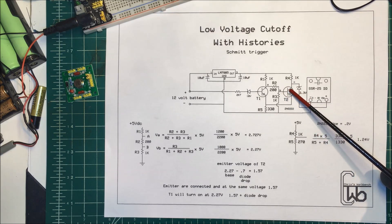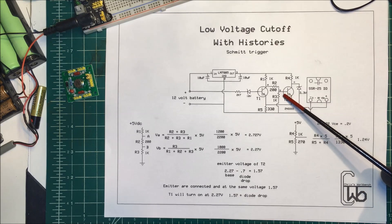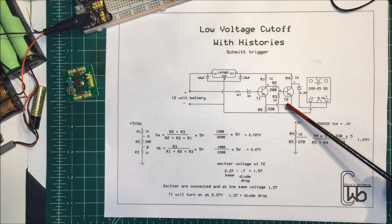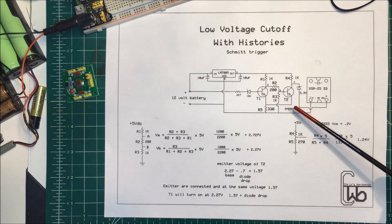Now the emitter though we're going to drop 0.7 volts across here so the emitter is going to only have 1.57 volts on it. That's going to be important here in a few minutes.